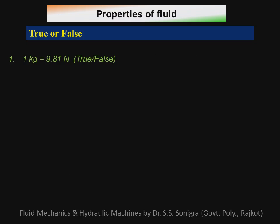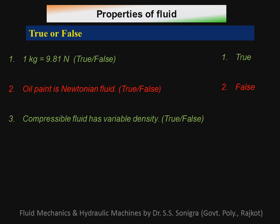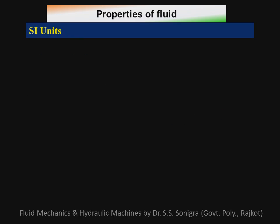Now some true or false questions. One: one kilogram equals nine point eight one newtons — true. Two: oil paint is a Newtonian fluid — false, it is a non-Newtonian fluid because it does not obey Newton's law of viscosity. Three: a compressible fluid has variable density — true, because when pressure is applied and volume changes, density also changes. Four: intermolecular forces are very high in gases — false, because in gases intermolecular forces are very low.